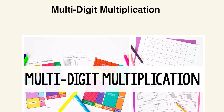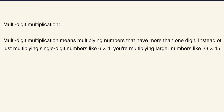Multi-digit multiplication means multiplying numbers that have more than one digit. Instead of just multiplying single-digit numbers like 6 times 4, you're multiplying larger numbers like 23 times 45. For this video we're focusing on two-digit by two-digit, but the same strategies also apply to three-digit by two-digit or three-digit by one-digit problems.